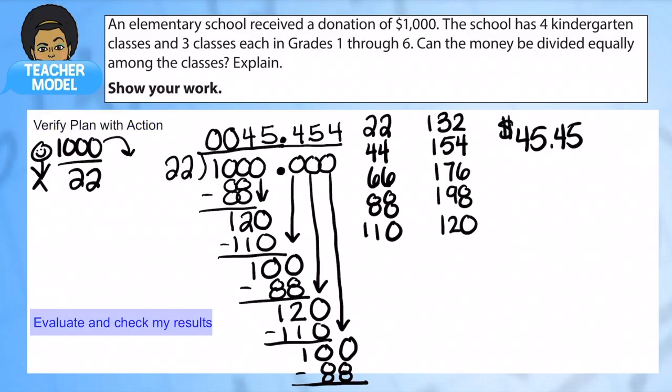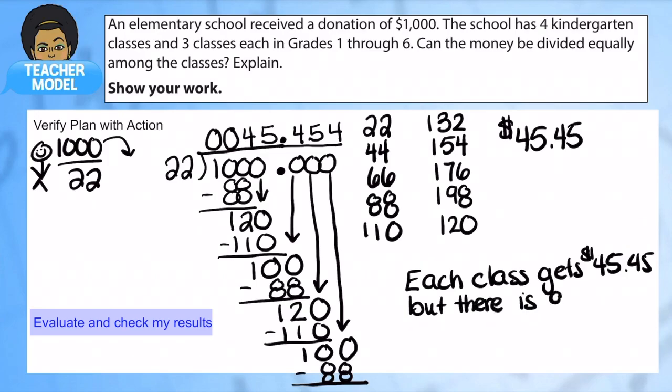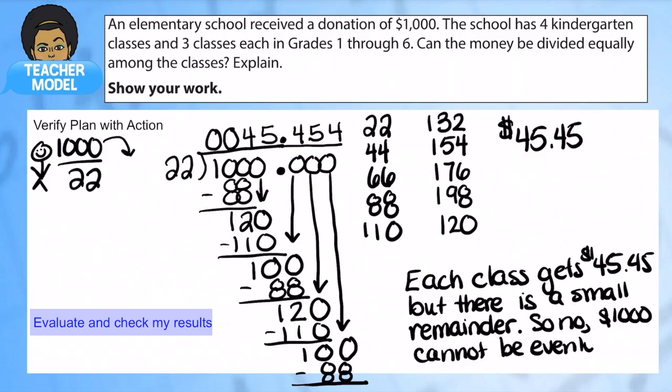So let's write our complete answer. Each class gets $45.45. But there is a small remainder. So no, $1,000 cannot be evenly distributed.